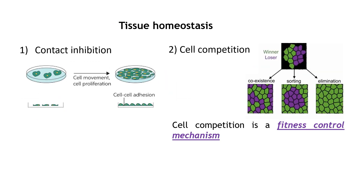Tissue homeostasis is a growing field, and we now know there are internal and external environments plus a lot of cell rearrangement. To understand it, we have two fields of research that have been active for decades. We previously talked about contact inhibition, which is one of those. If you look at this diagram, you see cells from the top and from the lateral view, with space everywhere.